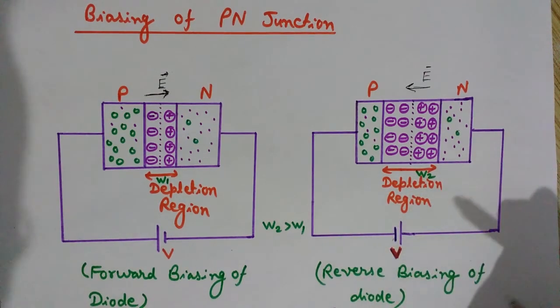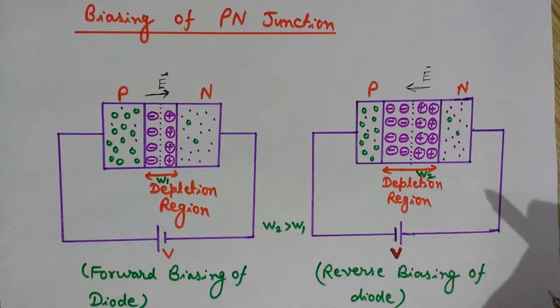This happens at very low voltages because of high doping in case of Zener diodes. Breaking of the bonds or breaking of the electrons from its atom or breaking of the structure, the lattice of the diode ions, is known as the Zener breakdown.